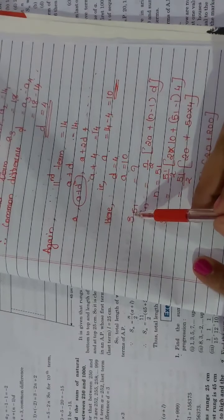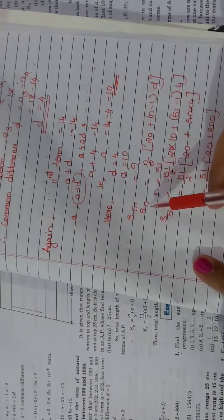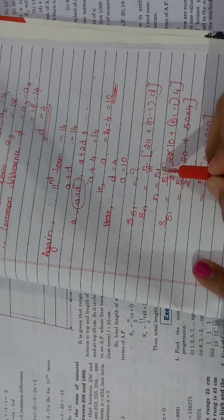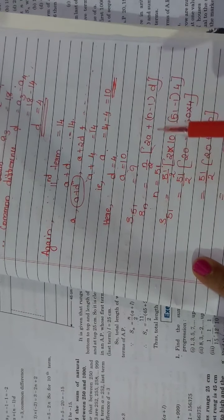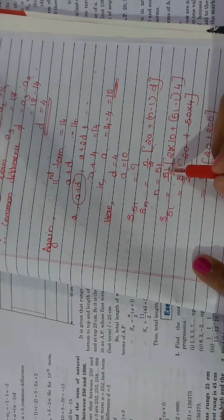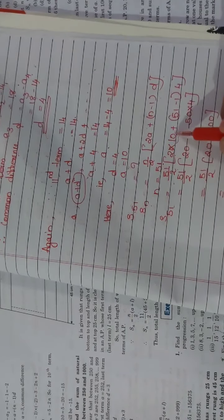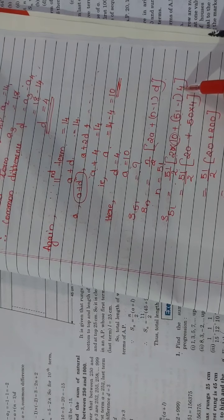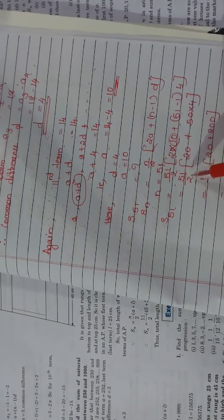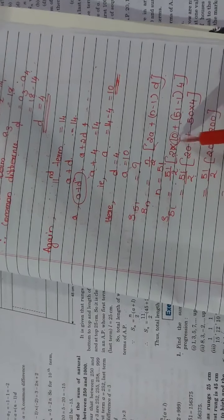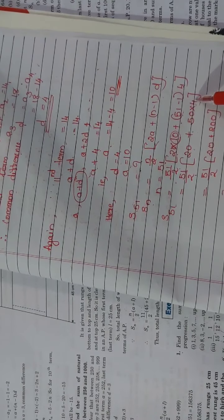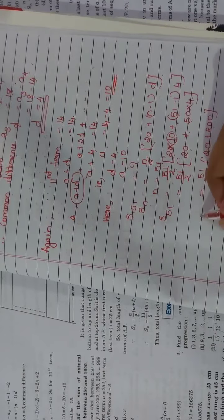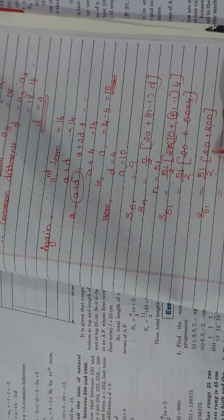Now we can find S51. We know that SN equals N by 2 into 2A plus N minus 1 into D, where N equals 51. So S51 equals 51 by 2 into 2 times 10 plus 51 minus 1 into 4. That gives us 51 by 2 into 20 plus 50 into 4. We know that 50 into 4 equals 200.